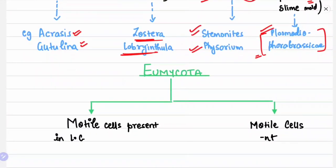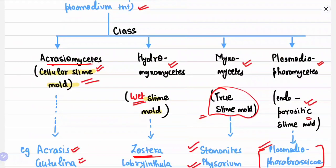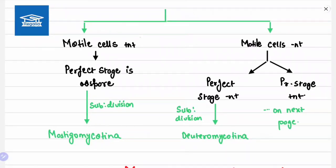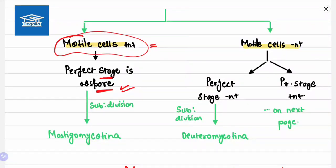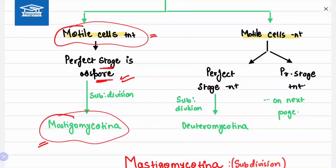Under Eumycota, which comprises the true fungi, the division is based on whether motile cells are present or absent in the life cycle. Where motile cells are present, the perfect stage is oospore, and the subdivision is Mastigomycotina. Where motile cells are absent, it is further divided into two parts: where the perfect stage is absent, and where the perfect stage is present.